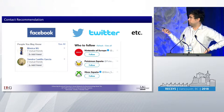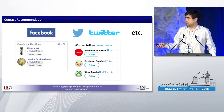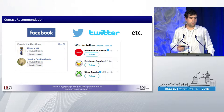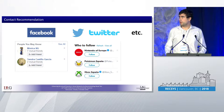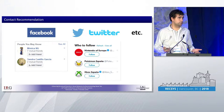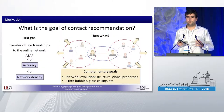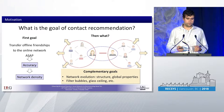We all know Facebook and Twitter have some mechanisms to recommend users in order to befriend them or follow them. In order to motivate our work, I will ask you a question: what is the goal of a contact recommendation? If we ask a system administrator, one possible answer could be the following: to transfer offline friendships to the online network as soon as possible in order to increase the engagement of the users.